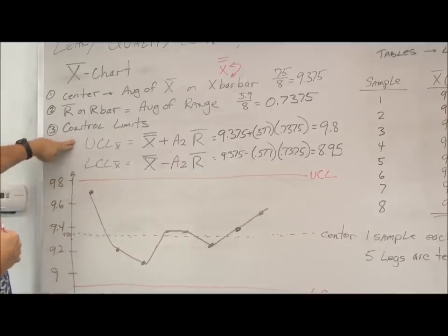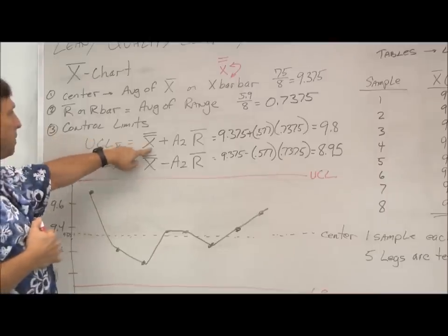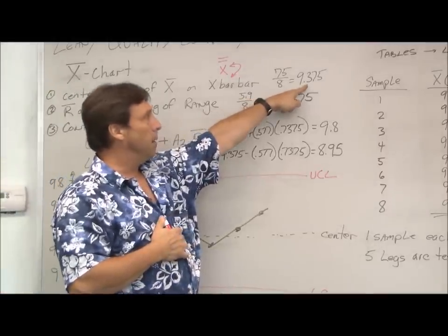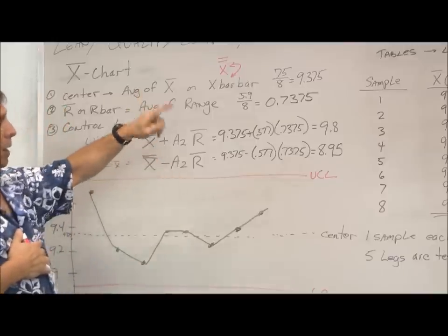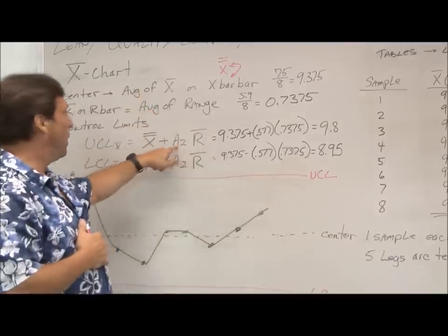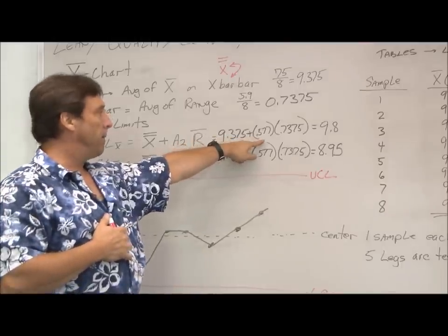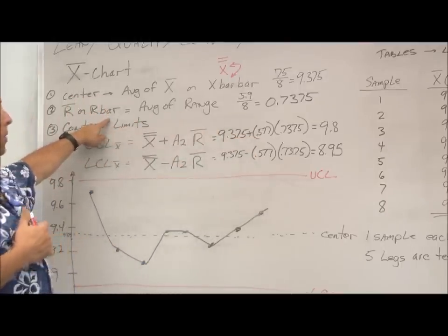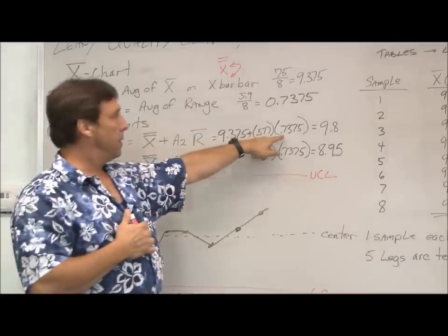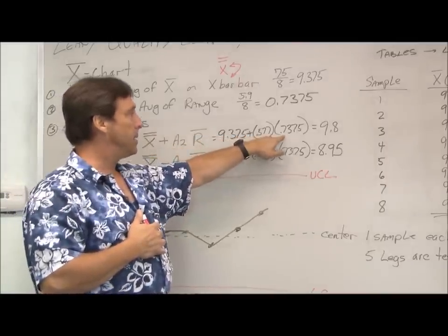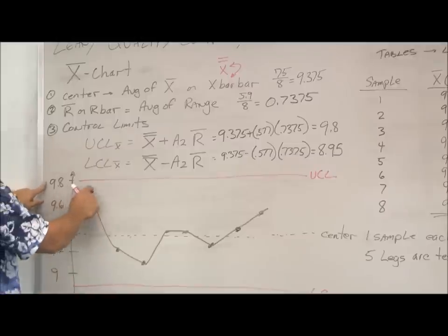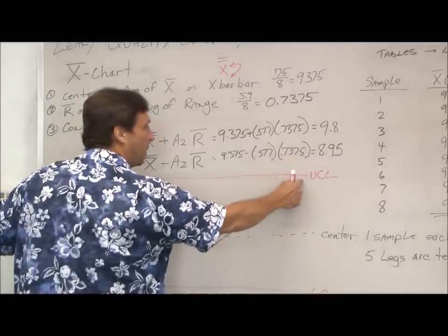So with that, we can calculate our upper control limit. Our X bar bar average of our averages, we calculated at 9.375. From our table, we know that our A2 is 0.577. And we know our R bar, or our average of the ranges, is 0.7375. So that's 0.98. So that 0.98 gives me my upper control limit.